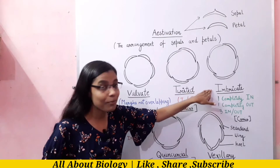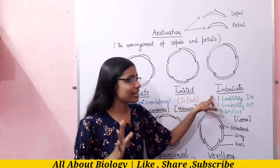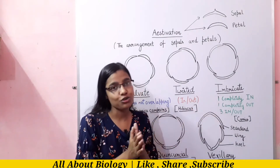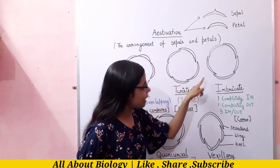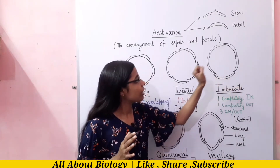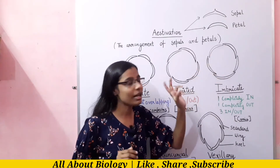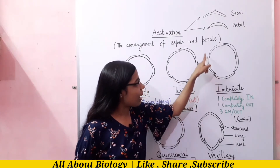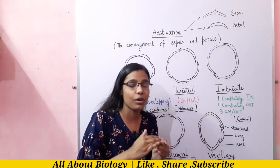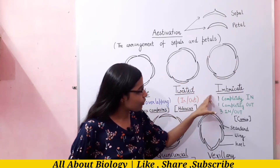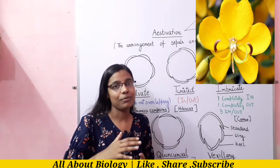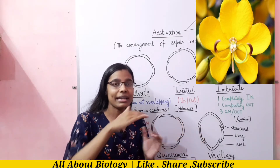Now coming to imbricate aestivation. In imbricate aestivation, one petal is completely in, one petal is completely out, and the remaining three petals show an in-and-out situation. As seen in the diagram, one petal's margins are completely out, the next petal is completely in, and the remaining three petals each have half their margin inside and half toward the outer side, showing different patterns.